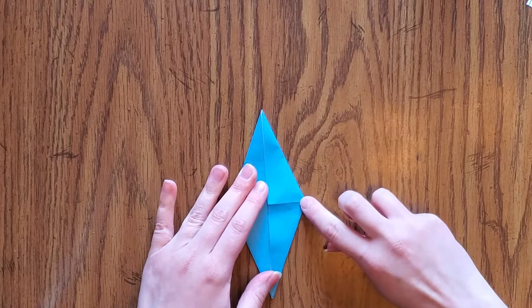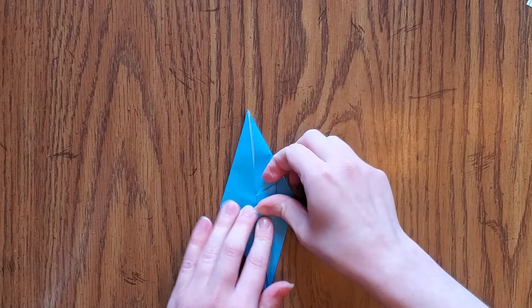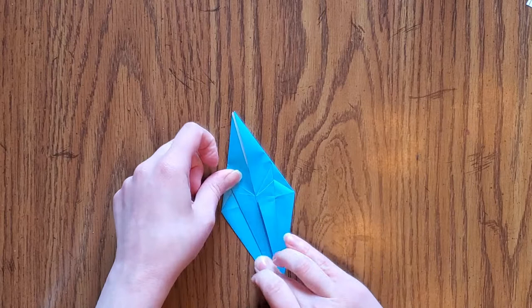Now take the top of one corner and fold it so the edge lines up with the center, just as we did before. Do the same on the other side and then flip the paper over and repeat.